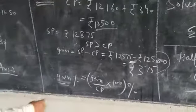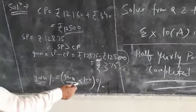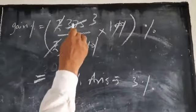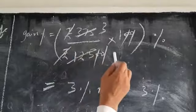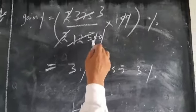Therefore, applying the formula, gain percent equals total gain upon CP into 100 percent. Therefore, gain percent equals 375 upon 12,500 multiplied by 100. Cancel the zeros.